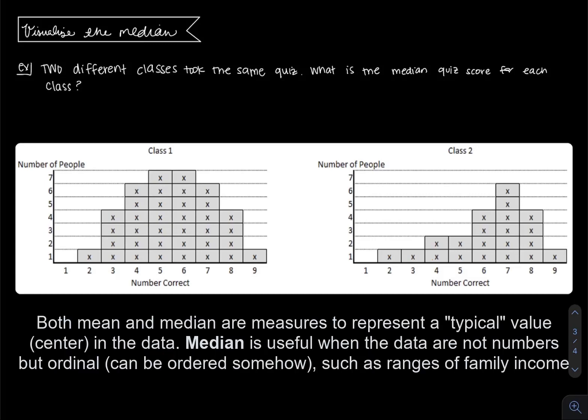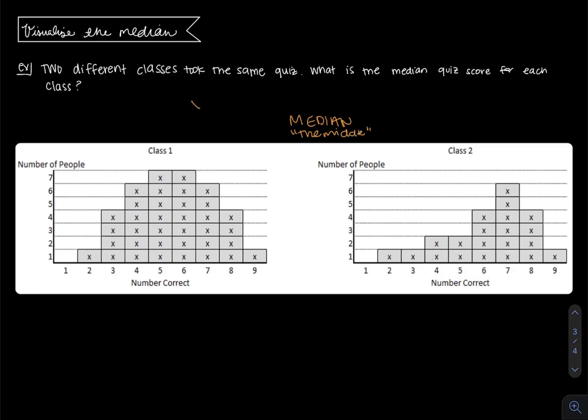The median is a measure of center, just like the mean, but it's calculated a little bit differently. Median is a measure of center. It actually means the middle number. What that implies is that if there's x number of values below the median, then there has to be around x number of values above the median.